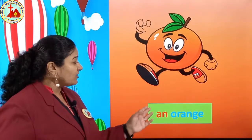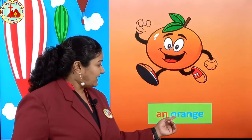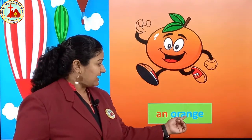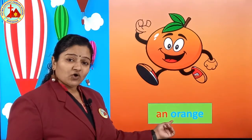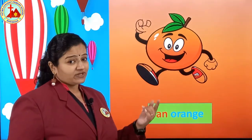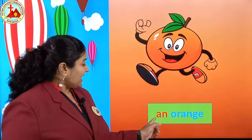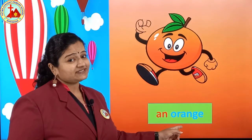Next one is orange. O, R, E, N, G, E — orange. First letter is O. O is the vowel. Then before vowel what we put? AN. An orange.